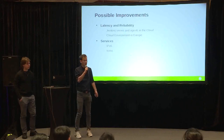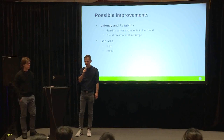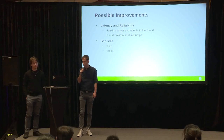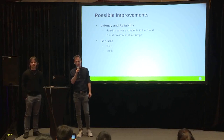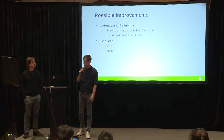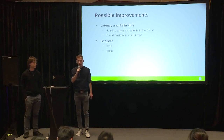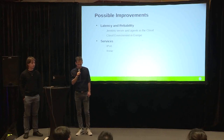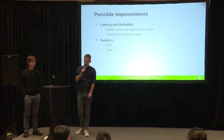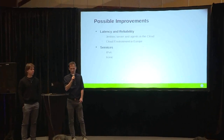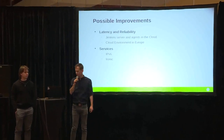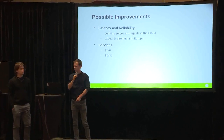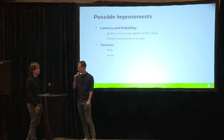This wasn't quite enough, though — we have some latency and reliability issues. One idea is to co-locate Jenkins and the agents in the cloud to have better reliability. Another option would be to create another cloud environment in Europe. And because we want to test more, we would like to enable IPv6 and also use Ironic. Stefan will tell more about how we did it.